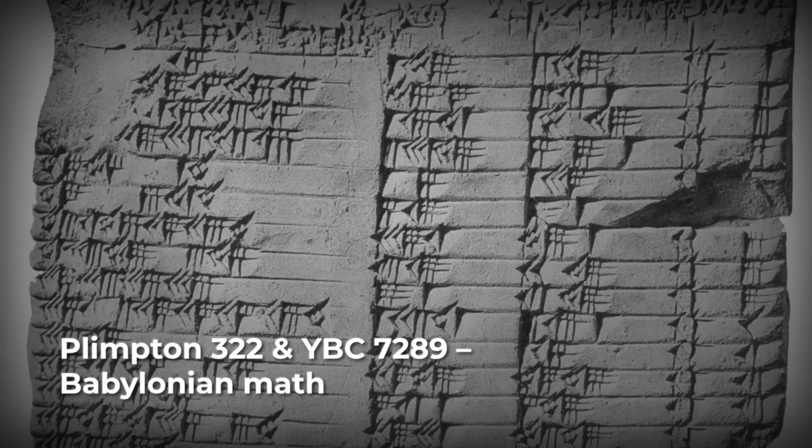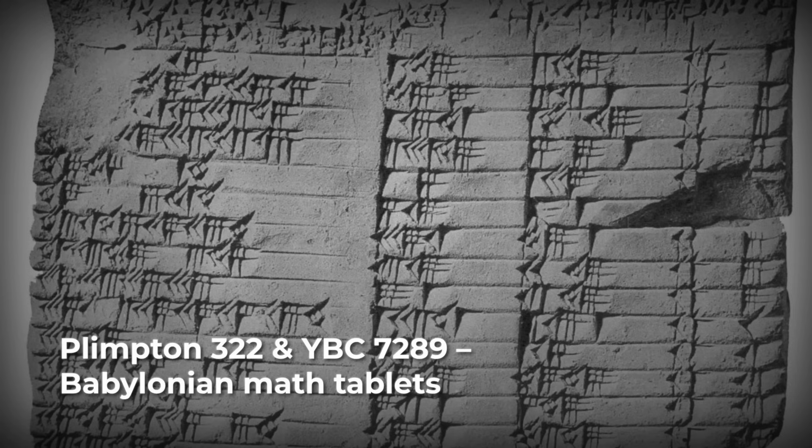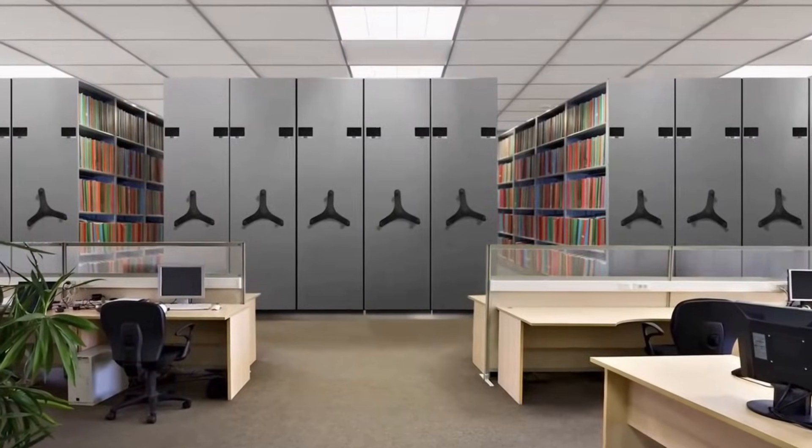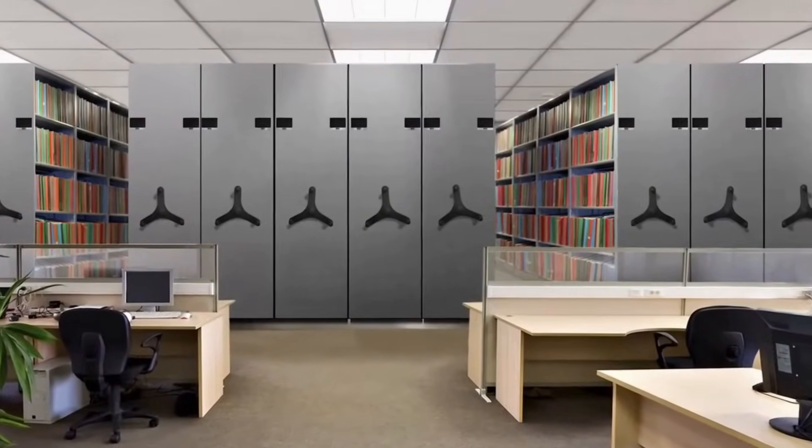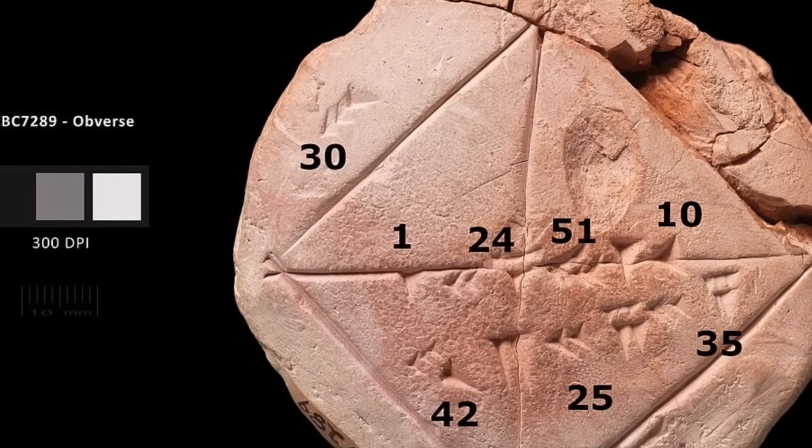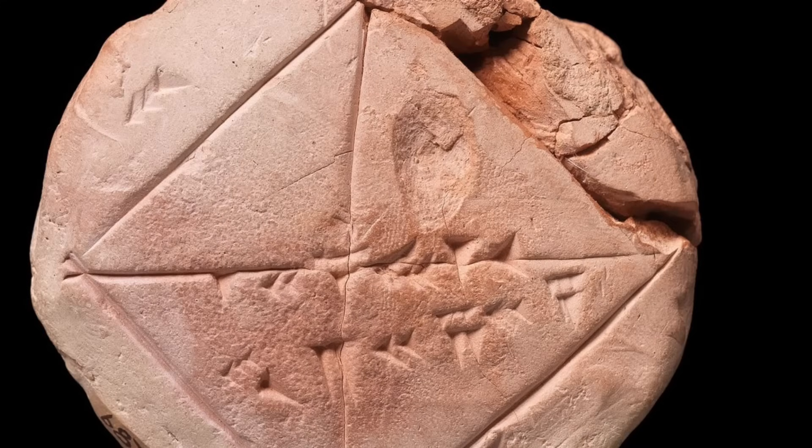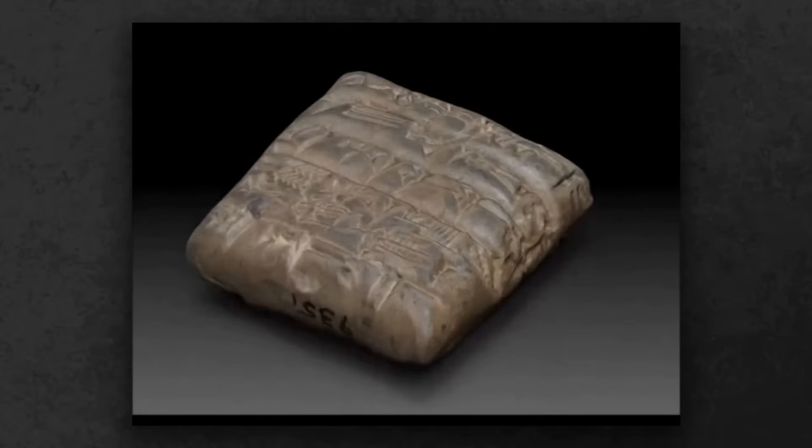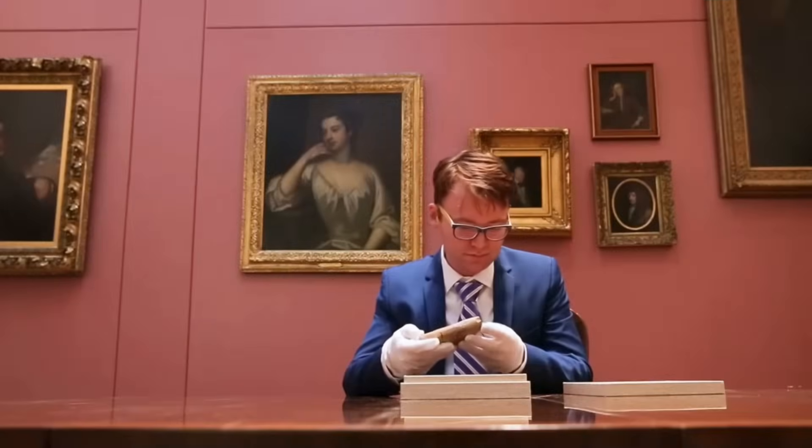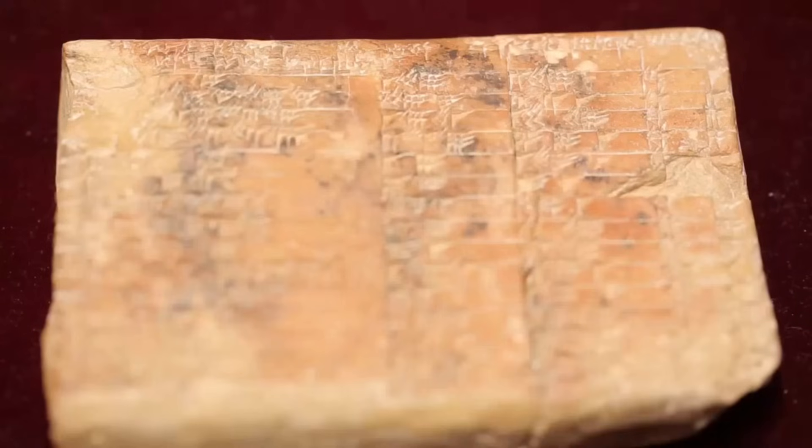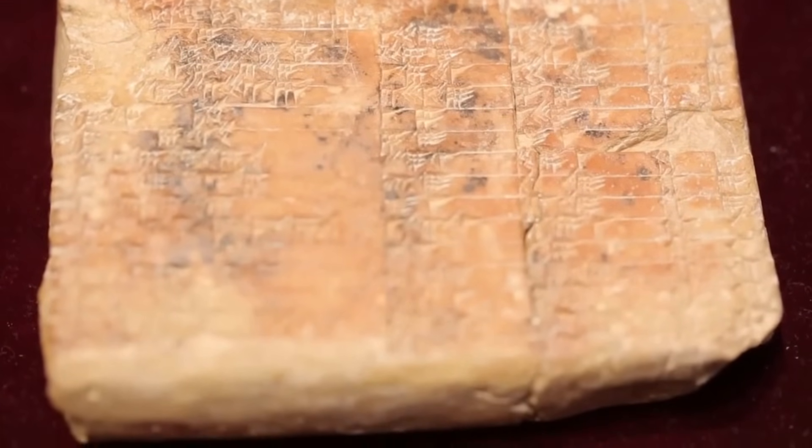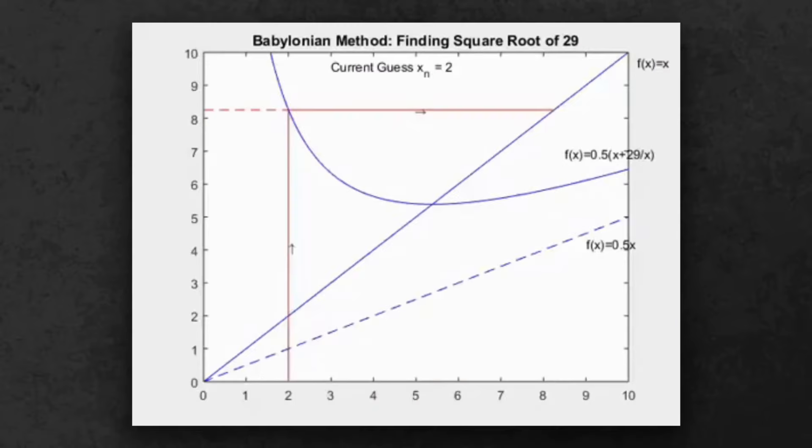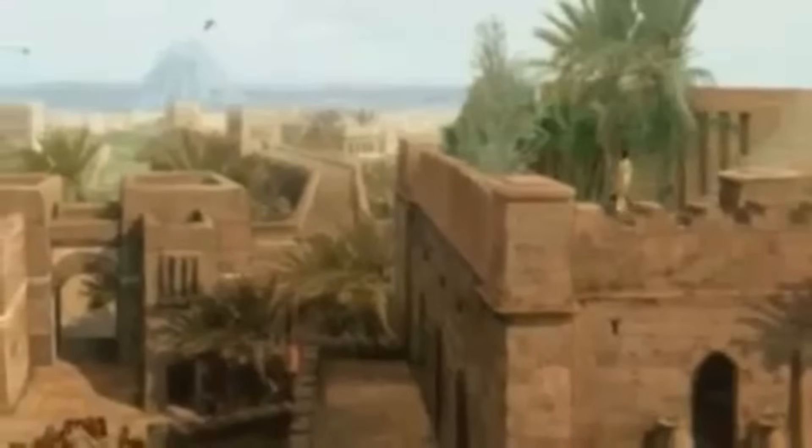Tablets like Plimpton 322 and YBC 7289, dug up from the ruins of Babylon and now resting in museum vaults, show the scribes' handiwork. YBC 7289, for example, holds a calculation of the square root of 2 written in base 60, a kind of ancient math homework scratched out nearly 4,000 years ago. Plimpton 322 lists rows of Pythagorean triples, all in sexagesimal notation.